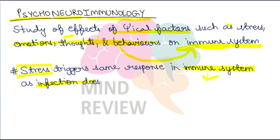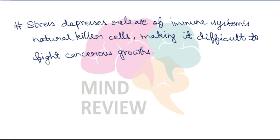Yeh dekha gaya hai via research ki jo stress hai, it triggers the same response in the immune system as any infection does. Jaise agar aapke body mein koi infection aayega, koi virus aayega, koi bacteria aayega, toh immune system ek dam activated ho jaata hai aur fight karne ki koshish karta hai us infection ke saath. So similarly, psychological factor, that is stress, also triggers the same response in the immune system.